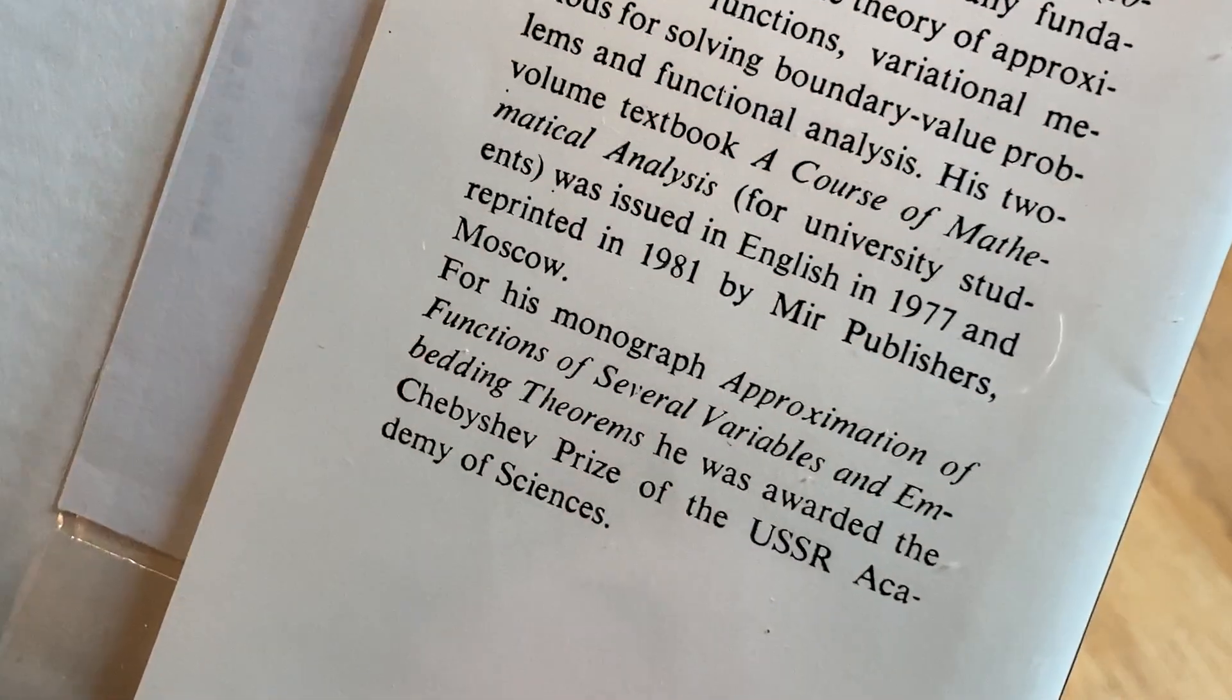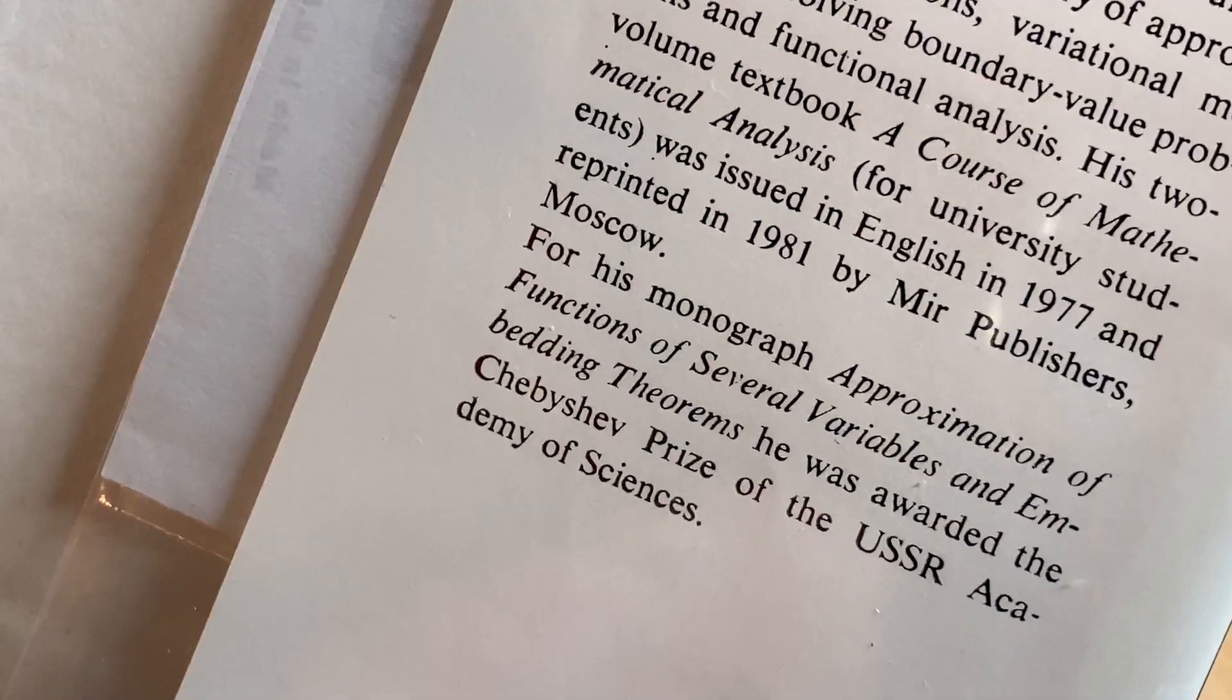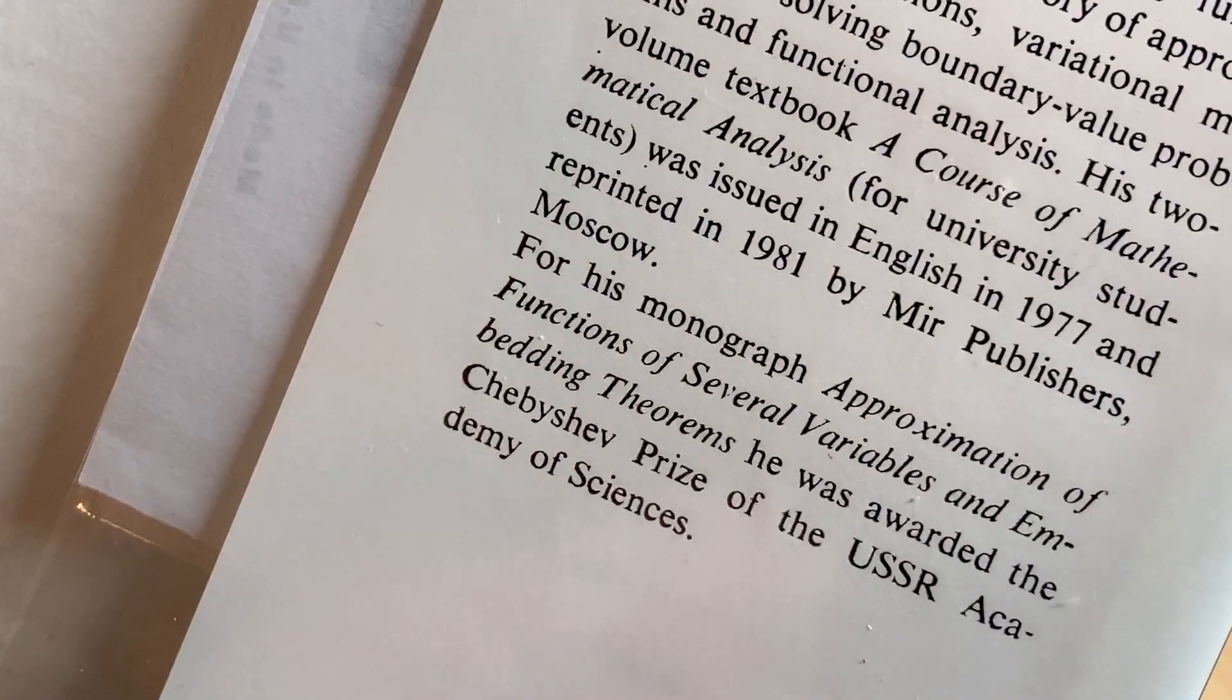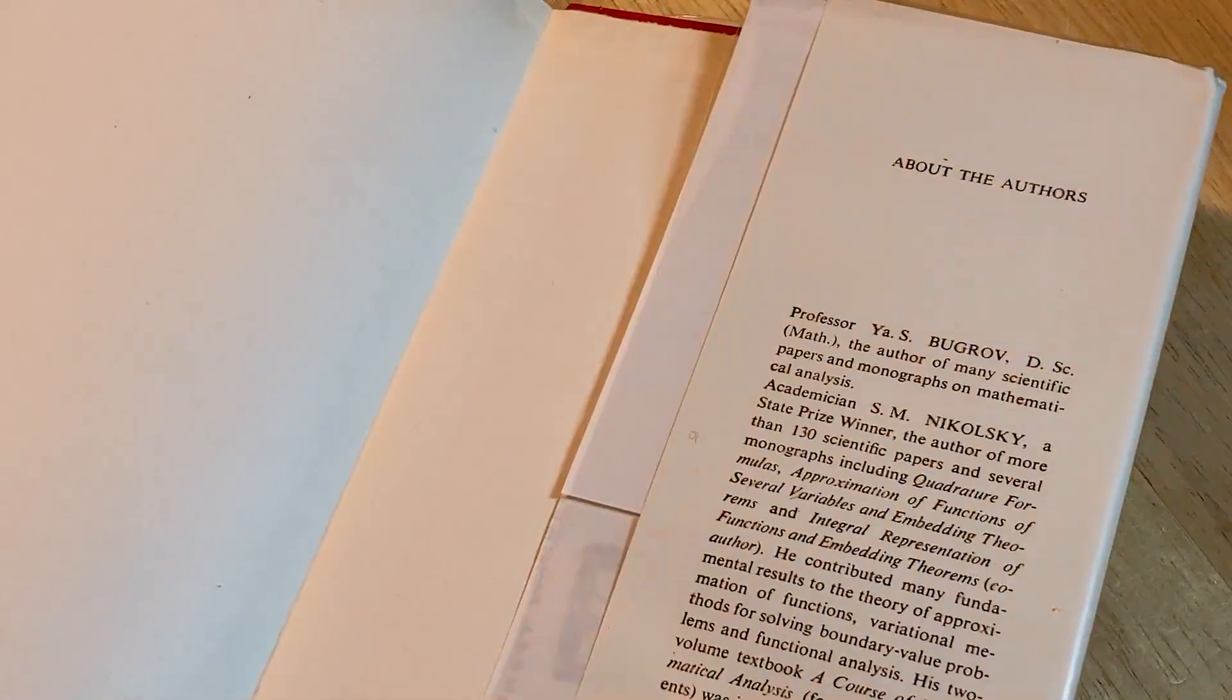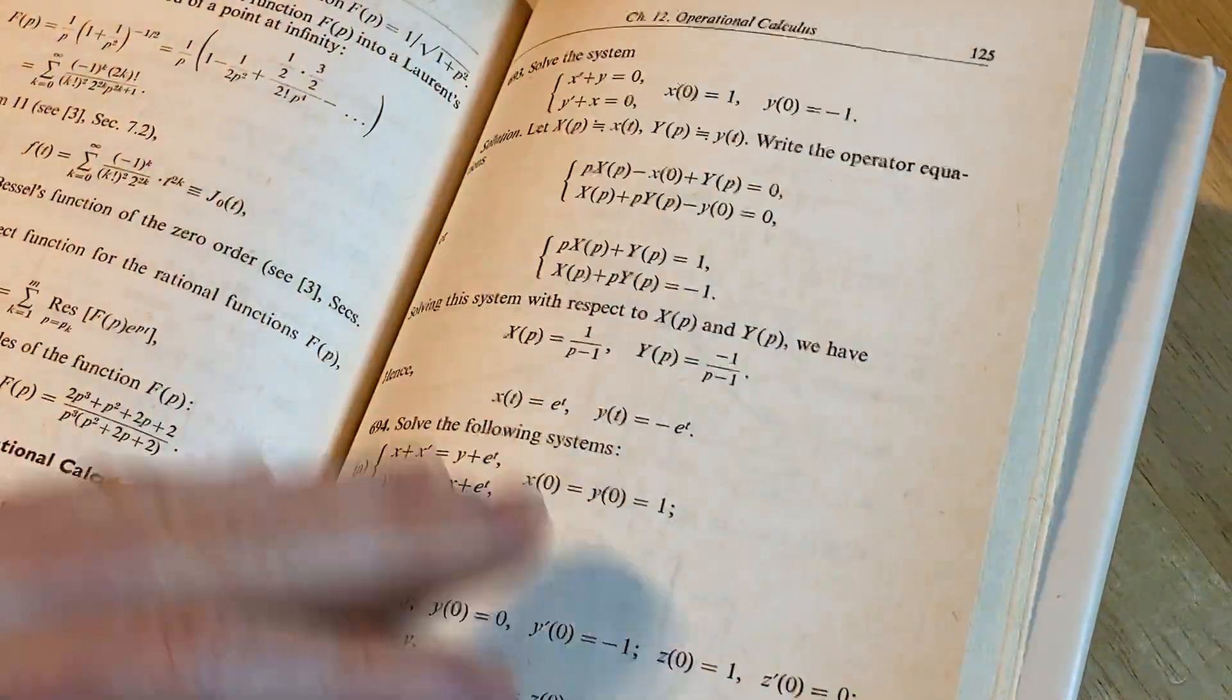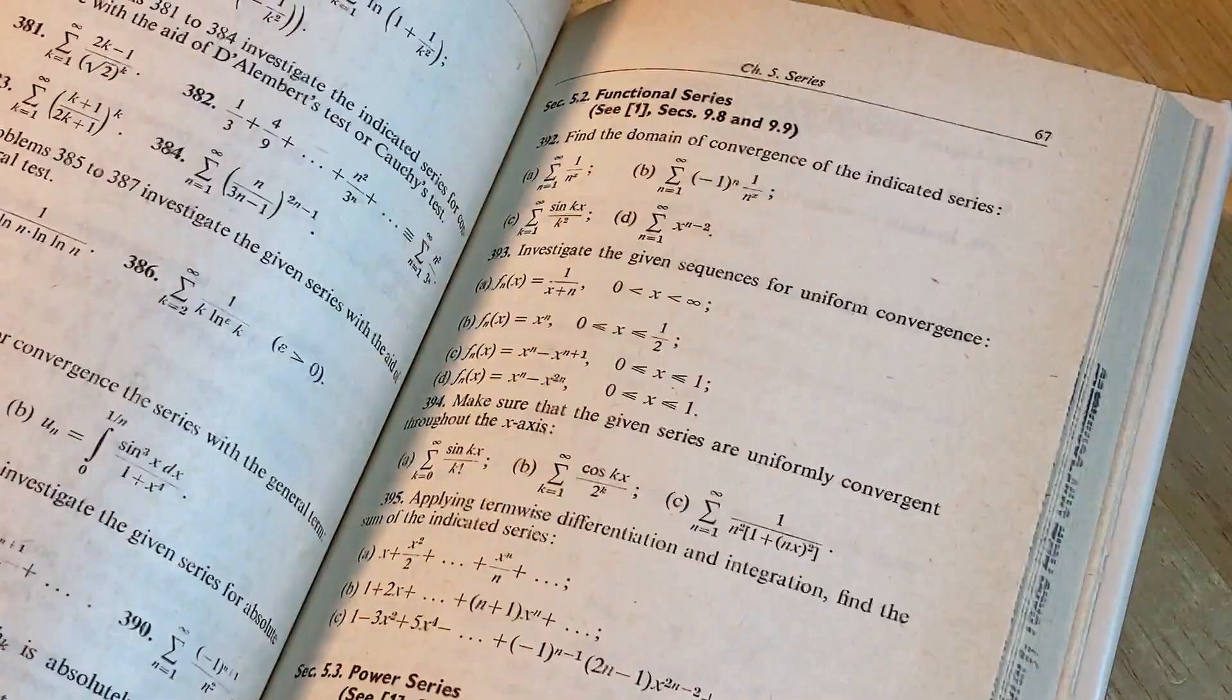Yeah, so he's made some serious contributions. For his monograph, approximation of functions of several variables and embedding theorems, he was awarded the Chebyshev Prize of the USSR Academy of Sciences. Oh, Chebyshev. Chebyshev was a mathematician. Chebyshev's theorem is something that you study in probability or statistics. It's pretty cool.